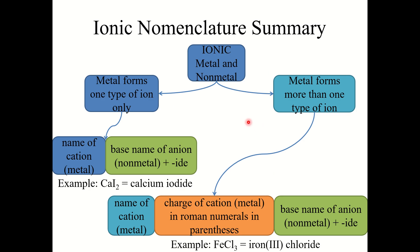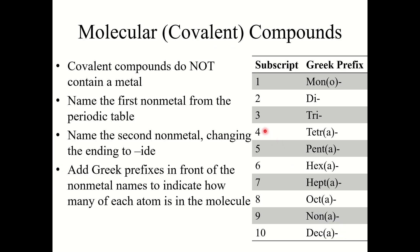To summarize ionic nomenclature: ionic compounds generally contain metals and nonmetals and may contain polyatomic ions. If the metal forms only one type of ion, give the cation name and the base name of the anion plus "-ide" (or the polyatomic ion name). If the metal forms more than one type of ion, include the charge of the cation in Roman numerals in parentheses after the metal name, followed by the anion name. This video will be split in two — the second half covers covalent compounds and acids.